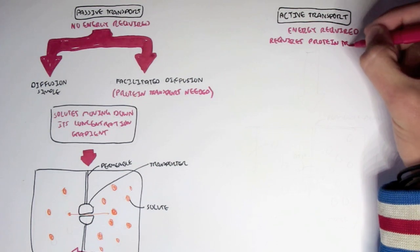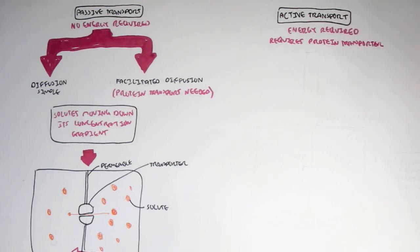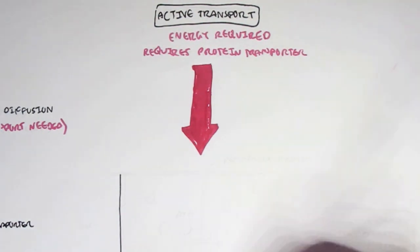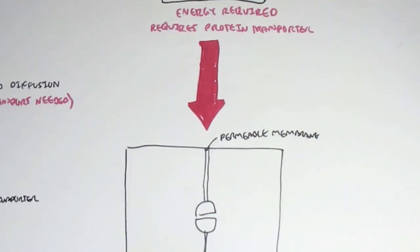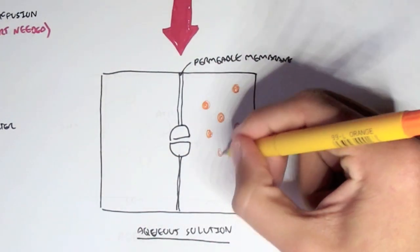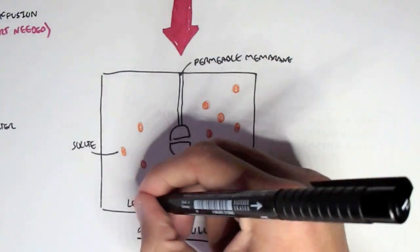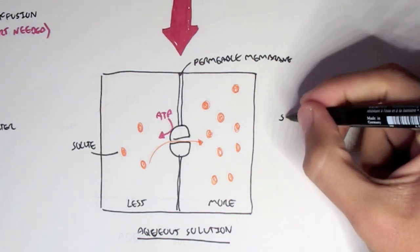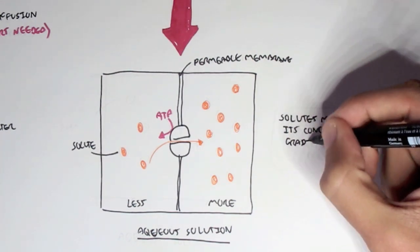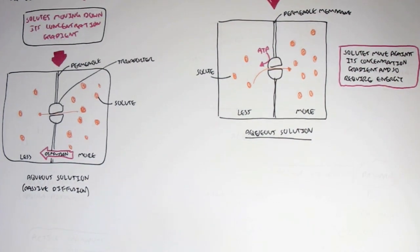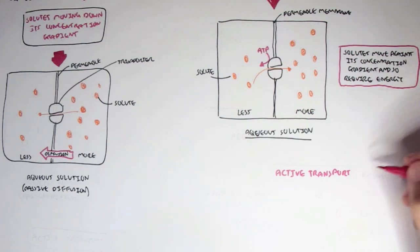Active transport also uses a protein transporter, but it requires energy. We have a container with a permeable membrane and a transporter in the middle, in an aqueous solution. The solutes are still highly concentrated on the right. Normally solutes move down their concentration gradient, but in active transport, solutes move against their concentration gradient and so energy is required. It moves to an area where it's already highly concentrated — the reverse of passive transport.